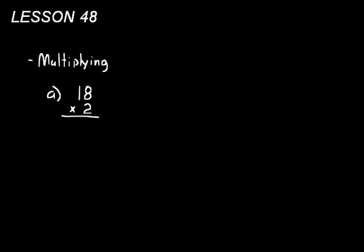Look at practice problem A, 18 times 2. Now, what we would have done originally, we would multiply the ones column 8 times 2, and that equals 16. Now, that's something different than what we did in lesson 44. All the numbers that we multiplied in that ones column, we would just get like a one-digit answer instead of a two-digit answer.